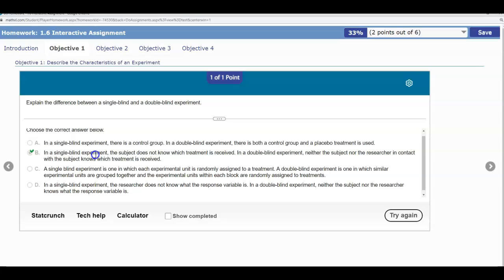In a single blind experiment, the subject does not know which treatment is received. In a double blind experiment, neither the subject nor the researcher in contact with the subject knows which treatment is received.